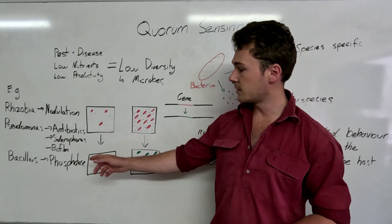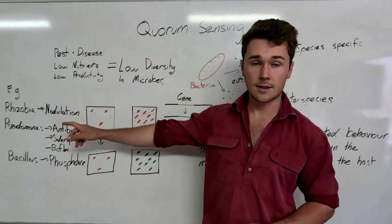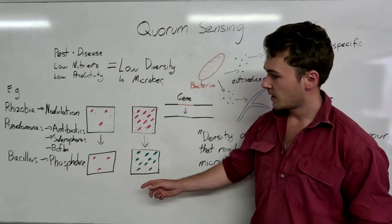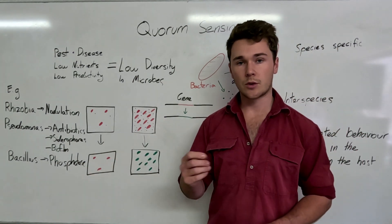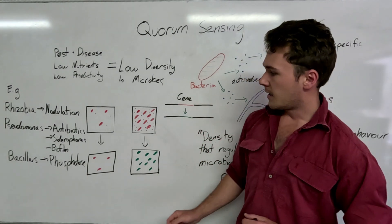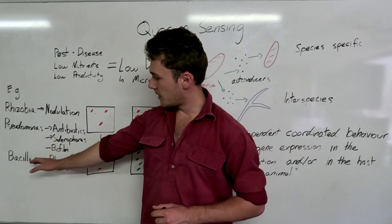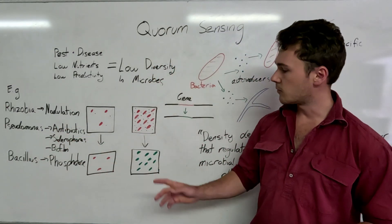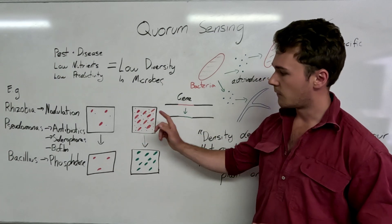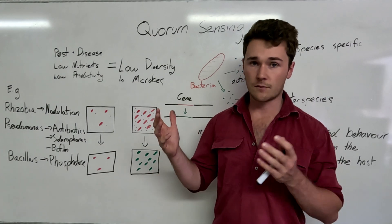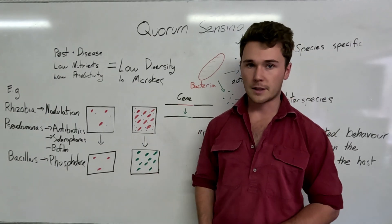Another great example is bacillus and actually pseudomonas does this as well, but it's in the production of phosphatase. Now, phosphatase is an enzyme used to solubilize phosphorus or locked up phosphorus in the soil. And so there needs to be enough bacillus or pseudomonas in the soil releasing these auto-inducers for it to start producing phosphatase so that it has an impact in actually producing soluble phosphorus for our plants.